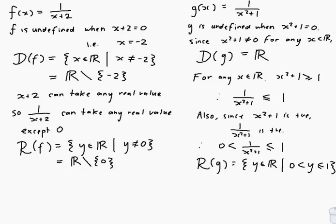You can also write this in interval notation: from 0 to 1, not including 0 so we put a round bracket there, and including 1. Let's check if we've answered the question — we were supposed to give the domain and range of f and g. We have the domain and range of f on the left-hand side, and the domain and range of g on the right-hand side. We're finished.